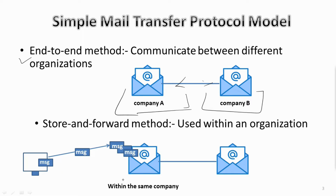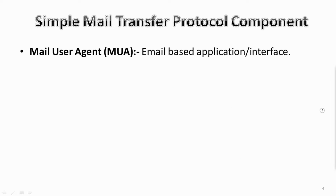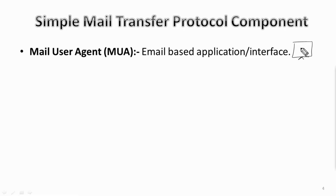The components of SMTP are the Mail User Agent, Mail Submission Agent, Mail Transfer Agent, and Mail Delivery Agent. The Mail User Agent is a computer application that helps you in sending and receiving mail. It is responsible for creating email messages for transfer to the Mail Transfer Agent.